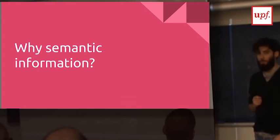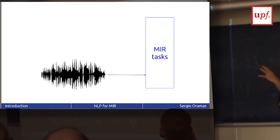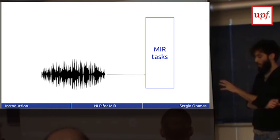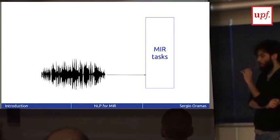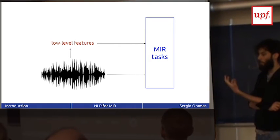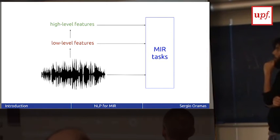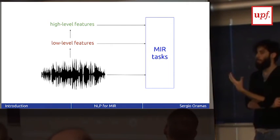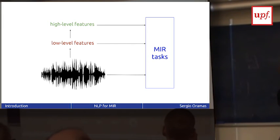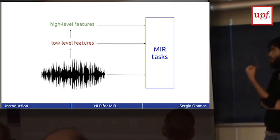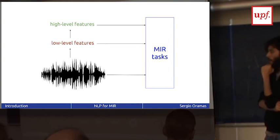So why semantic information? In a typical MIR pipeline, we can use the raw audio directly for a task, or we can extract low-level features from the audio that describe it and use those features in a machine learning or classification task. Or we can extract high-level features from the audio — semantics like the mood, the genre, instruments — and use these high-level features in the MIR task. This is the typical pipeline in MIR.